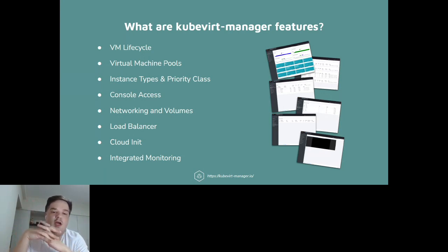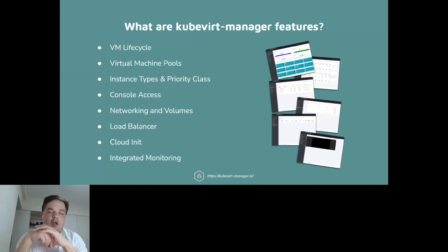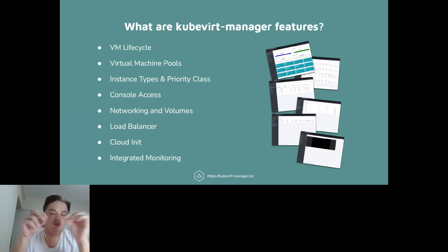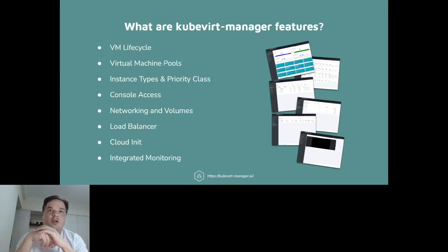We work with cluster instance types. I'm mentioning cluster instance types specifically because there was an issue on my GitHub about it today. We use cluster instance types because they're easier to work with in the interface — the regular instance type is namespaced, which causes some headaches to manage. When you install the tool, it also provisions two different priority classes that you can choose between: a default one and a preemptible one. When creating a virtual machine pool or a single virtual machine, you can choose between them.